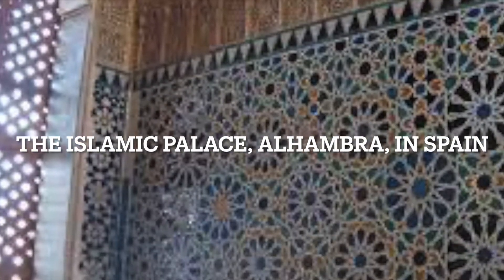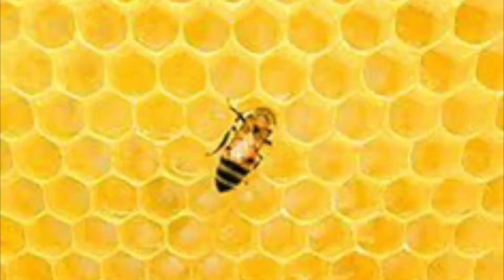In real life, tessellations are found all over the place. They can be used to serve a specific purpose like with floor tiles, they can be used in art like along the walls of the Islamic Palace Alhambra in Spain, or they can also be used in nature such as with honeycomb that bees make. That's a pattern of repeating hexagons which is also a tessellation.